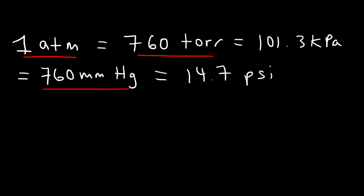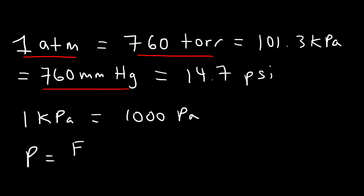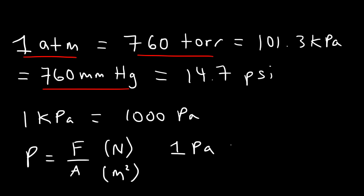In physics, a common unit of pressure you're going to see is pascals. One kilopascal is equivalent to a thousand pascals, just as one kilogram equals a thousand grams. Pressure is defined as force divided by area. The unit for force is the newton, and the standard unit for area is square meters. One pascal is equivalent to one newton per square meter.